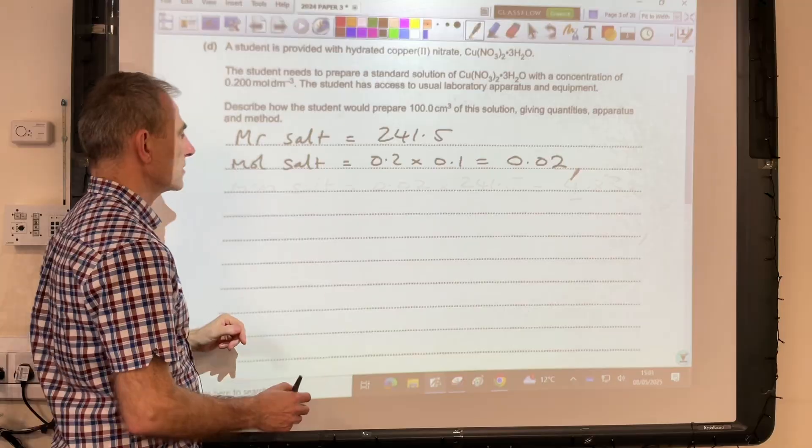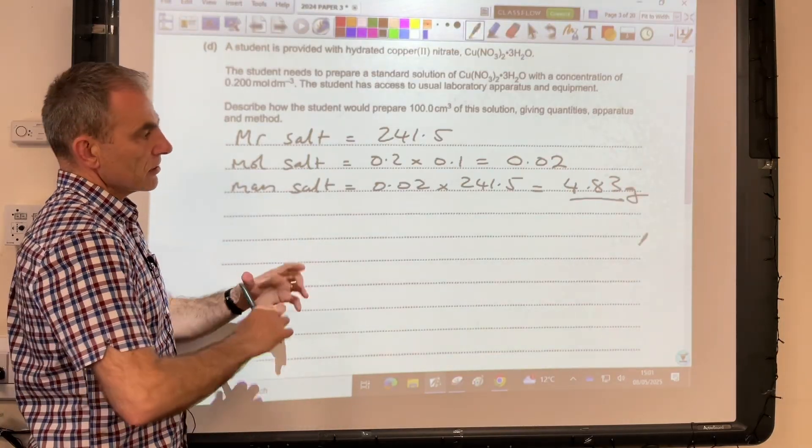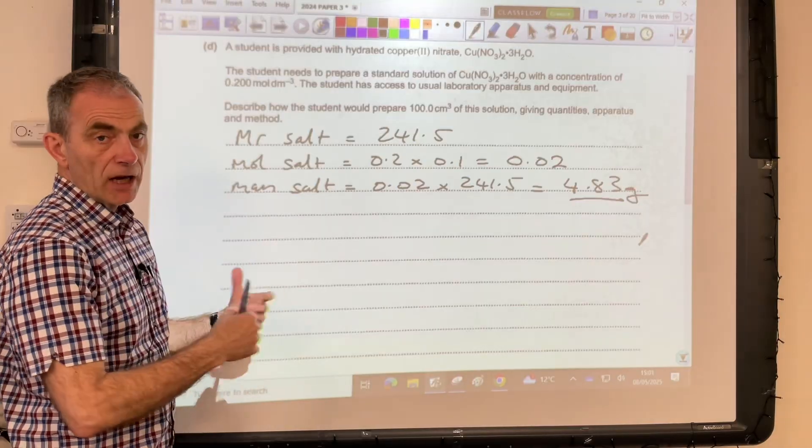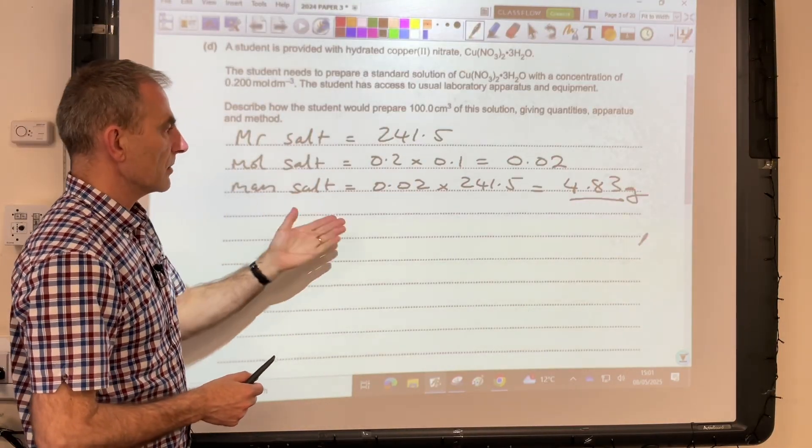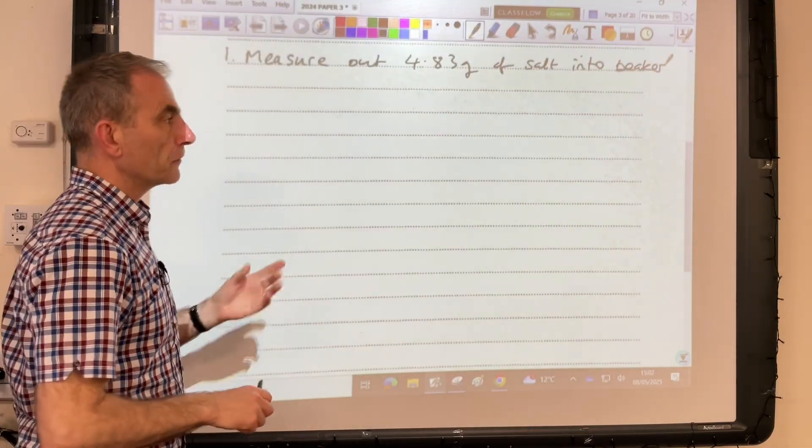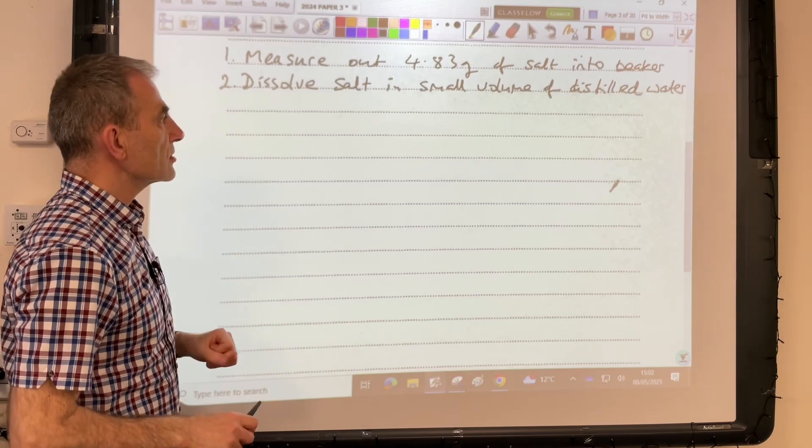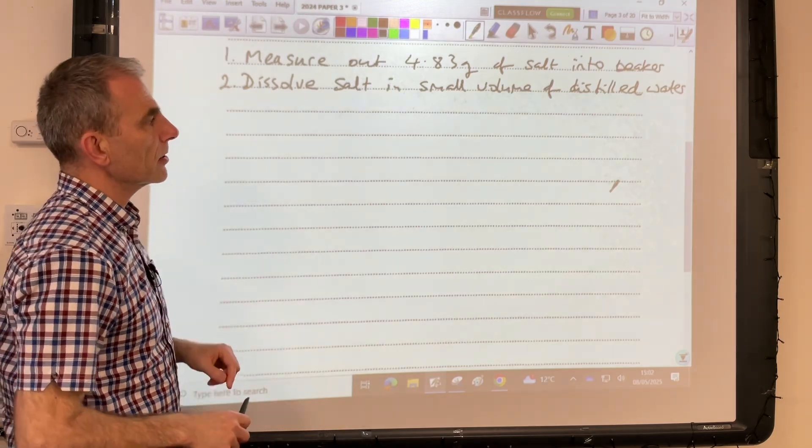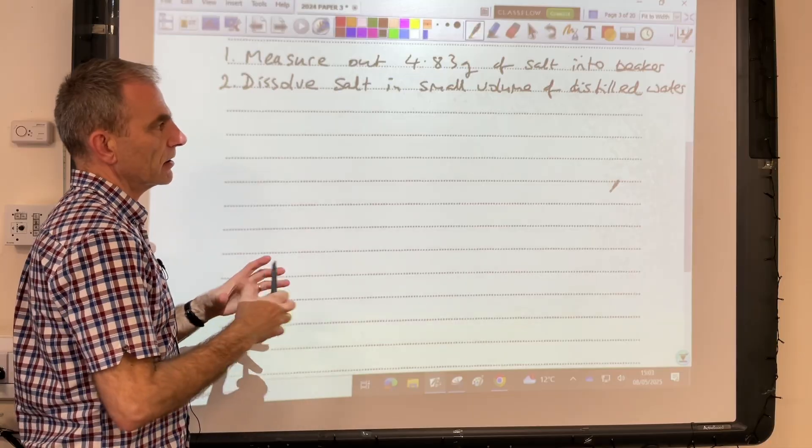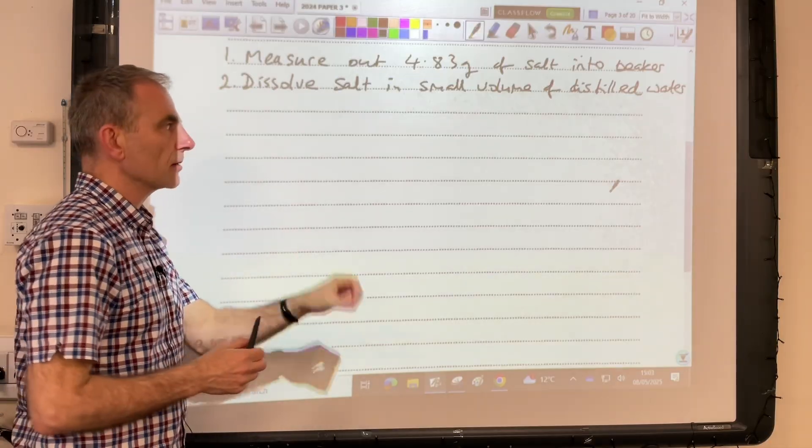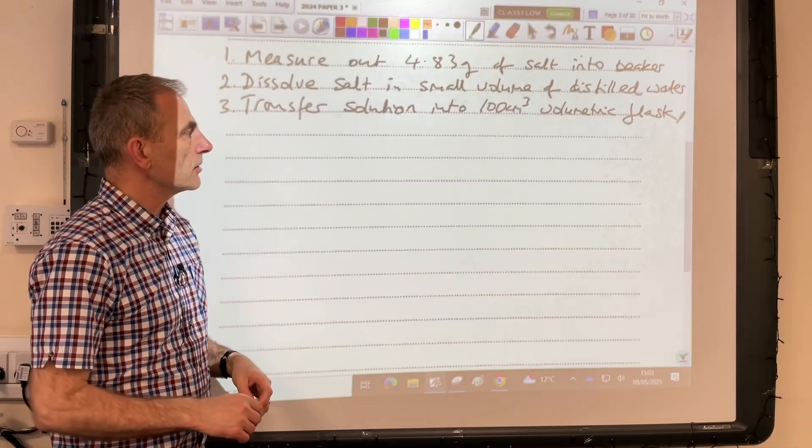Now all we need to do is multiply the moles by the Mr to get the mass of salt needed, so that's coming out at 4.83 grams. The next thing I'm going to do is describe the procedure—describe the method the students are going to need to follow to make that solution. The first thing you do is measure out that 4.83 grams of salt into a beaker. Then they need to dissolve the salt in a small volume of distilled water. We're not making the 400 cm³ yet, we're just making a small volume solution of the salt.